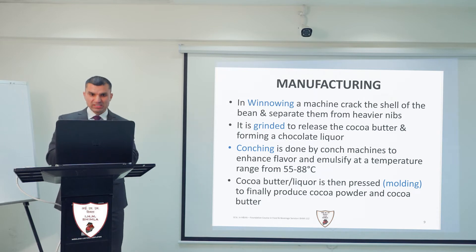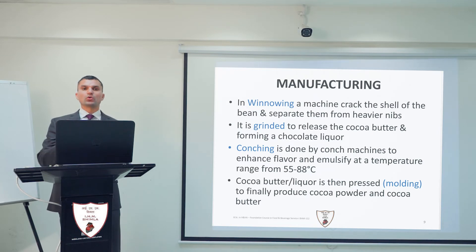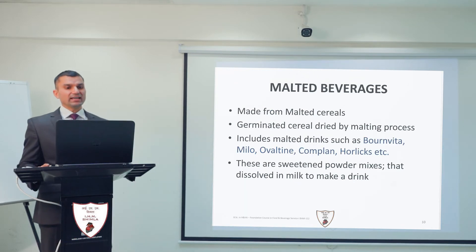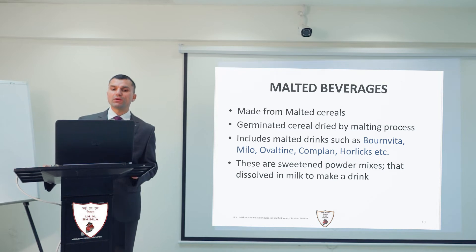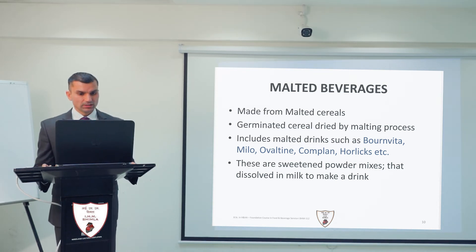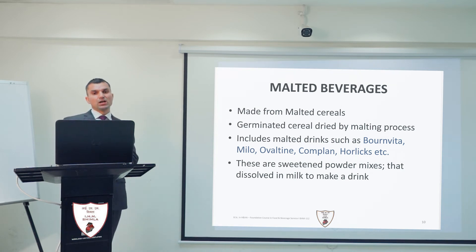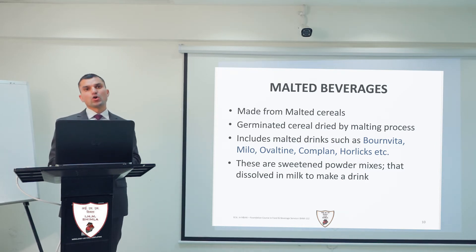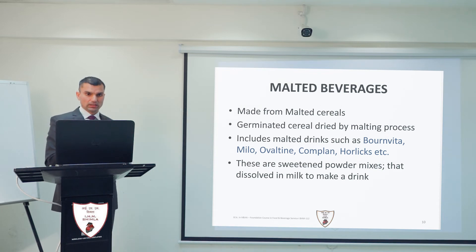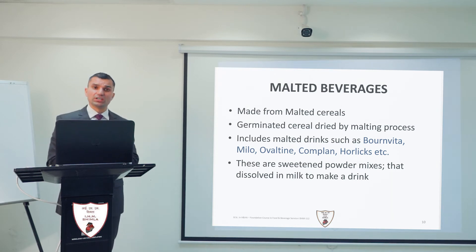Next, conching is done with the help of a conching machine to enhance the flavour and emulsify this chocolate liquor at a temperature between 55 to 88 degrees Celsius. The last step in the manufacturing of cocoa is pressing and moulding the cocoa butter or liquor, and finally we get different products like cocoa powder or cocoa butter. Moving ahead to the next non-alcoholic beverages — malted beverages. These are made from malted cereals, meaning germinated cereals which are further dried by the malting process. Malted beverages include drinks like Bournvita, Milo, Ovaltine, Complan, Horlicks, etc.